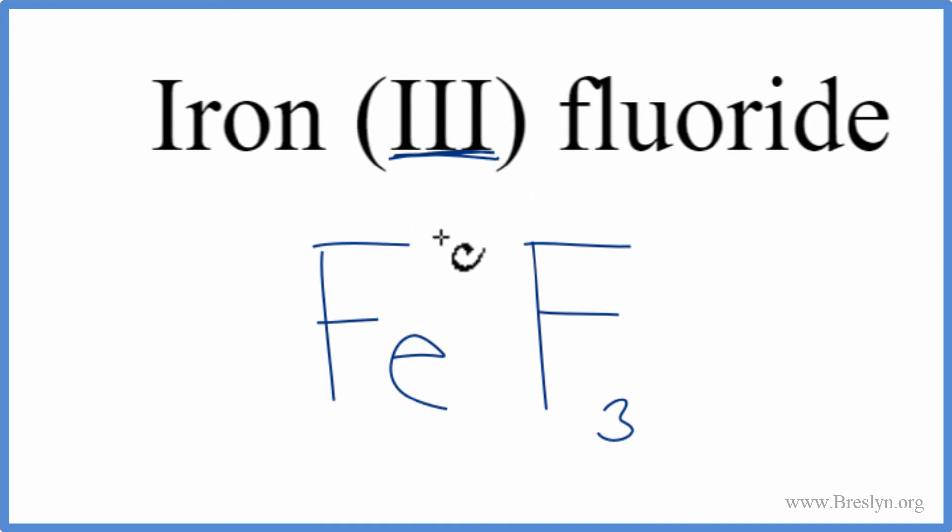Let's check our work to make sure we got that right. We said the iron, that was 3-plus because of that Roman numeral. It's a transition metal. And fluorine, 1-minus.